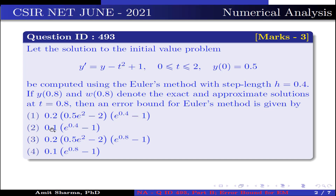Option 2: 0.1 × (e^0.4 − 1). Option 3: 0.2 × 0.5 × e² − 2 × (e^0.8 − 1). Option 4: 0.1 × (e^0.8 − 1).